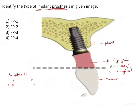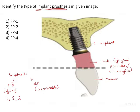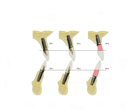FP means fixed prosthesis and RP means removable prosthesis. FP could be 1, 2, or 3; RP could be 4 or 5. There is no FP4, so that option is eliminated. Now, what is FP1, FP2, and FP3? For that, you need to understand this image — this image will suffice everything you need to know.